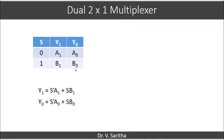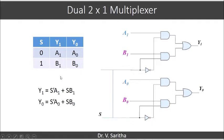The expressions for y₁ and y₀ are: y₁ = s̄a₁ + sb₁, and y₀ = s̄a₀ + sb₀. In general, if extended to more bits, yᵢ = s̄aᵢ + sbᵢ. The logic diagram based on these expressions shows two 2×1 multiplexers. When s = 0, s̄ becomes 1, so a₀ is selected into y₀ and a₁ is selected into y₁. When s = 1, b₁ comes into y₁ and b₀ comes into y₀. This is the dual 2×1 multiplexer.